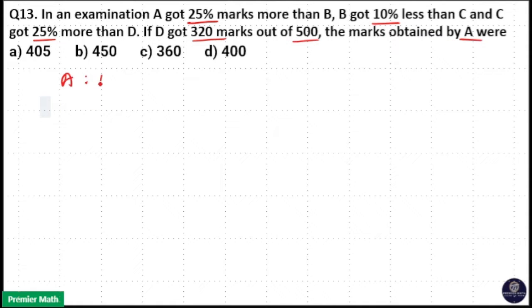So we have A, B, C and D here. A got 25% more means plus 25 by 100, that is plus 1 by 4. That is if B got 4 marks, A will get 5 marks because 25% is more marks.